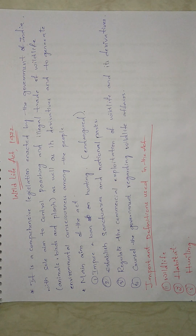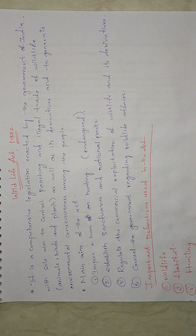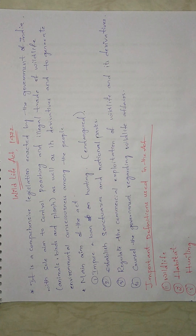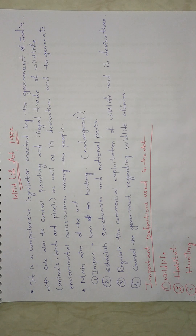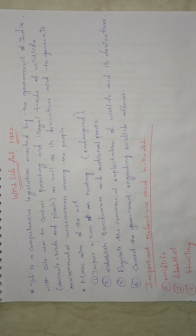The important definitions under the act are wildlife, habitat, and hunting. According to the act, wildlife includes any animal, bees, butterflies, fish, and aquatic and land vegetation which forms part of any habitat. Habitat includes land, water, or vegetation which is the natural home of any wild animal.